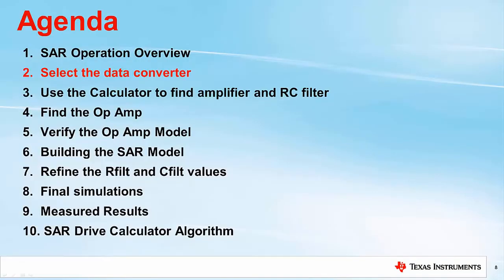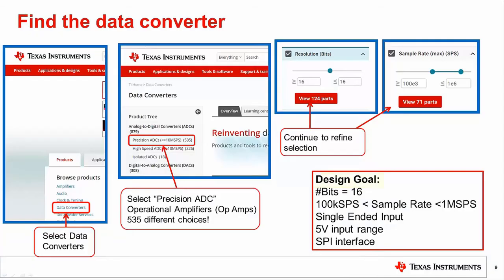Let's move on to the second step, where we select the data converter. For this example, our design goal is given in the lower right-hand corner: 16 bits, sample rate of 100 kS/s to 1 MS/s, single-ended input, 5-volt input range, and SPI interface. There are over 500 different precision data converters to choose from.